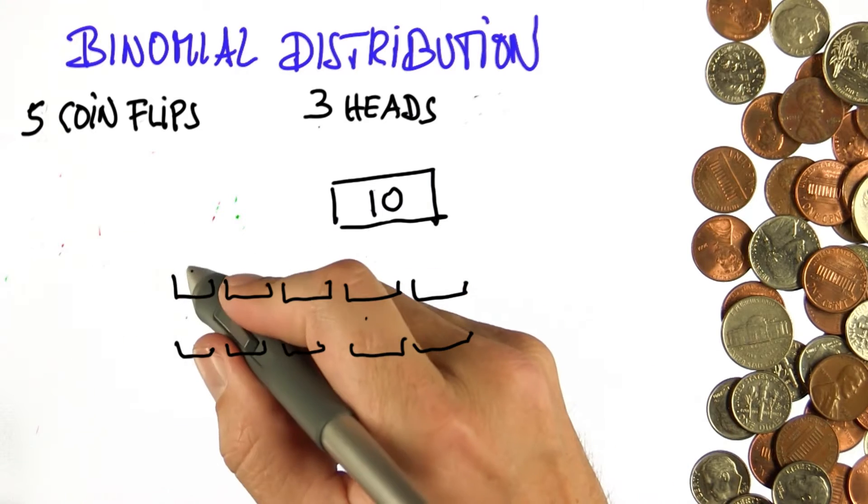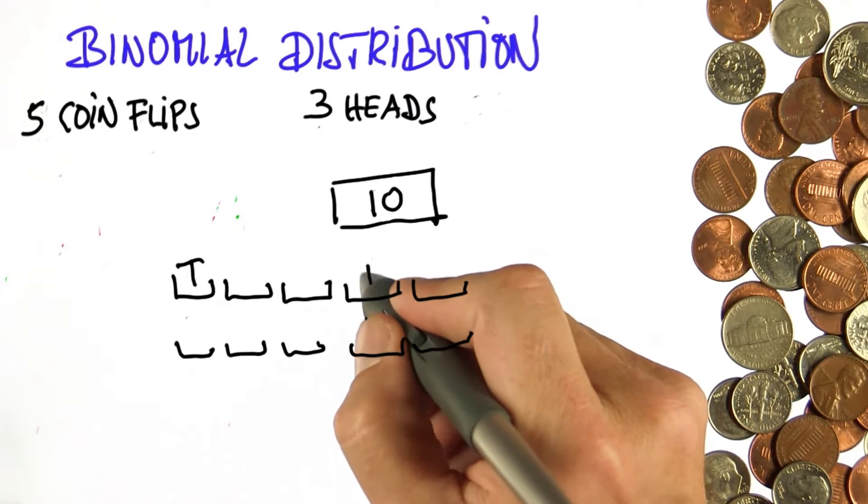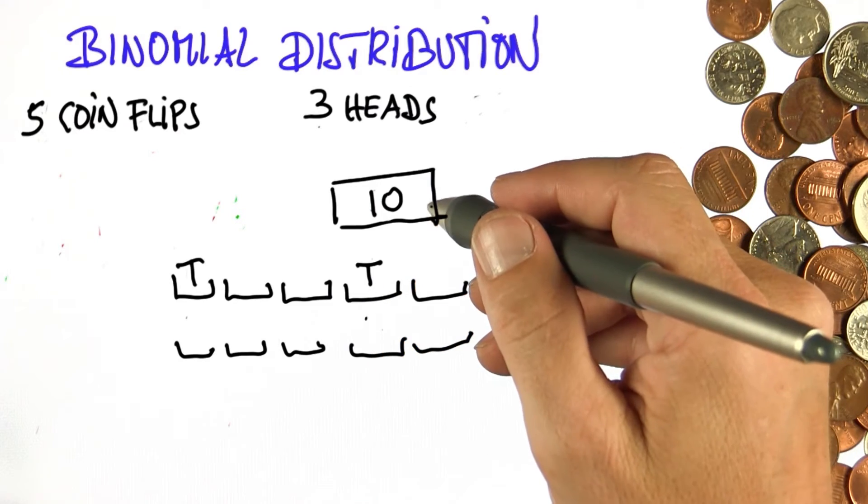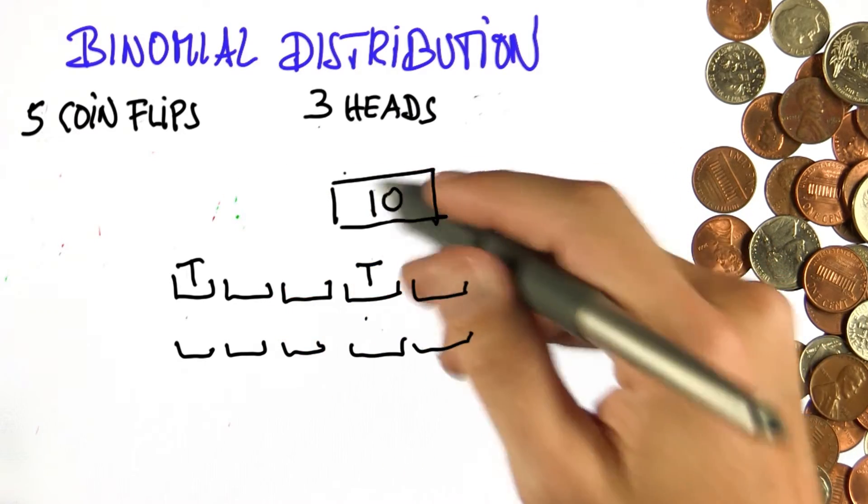So three heads means two tails. I can do the exact same game as before, where I place tails as opposed to heads. And that gives me the same equation as before. But let's do it the new way.